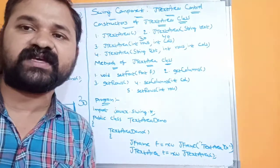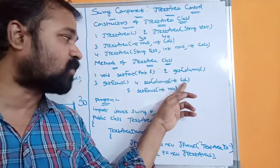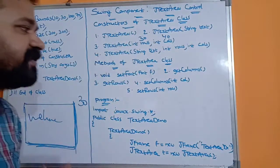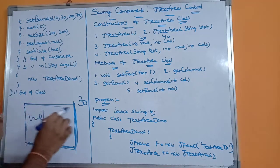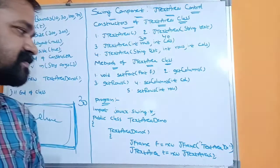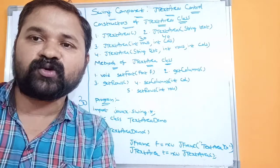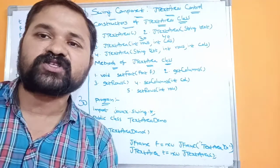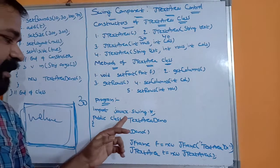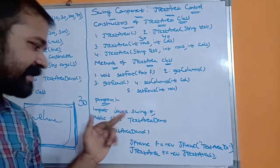The fourth method, setColumns(int column), is used to set the column width for the JTextArea control. The fifth method, setRows(int rows), is used to set the number of rows for the text area control. Now let's see the program. We start with: import javax.swing.*;